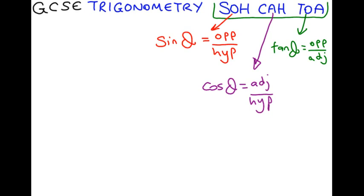Sine theta equals opposite over hypotenuse, or O over H. Cos theta is adjacent over hypotenuse, A over H, and tan theta is opposite over adjacent, or O over A.